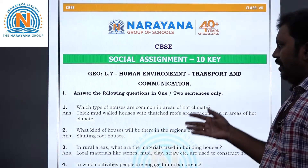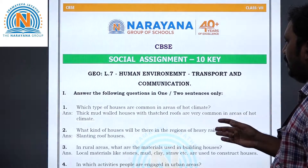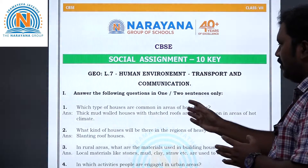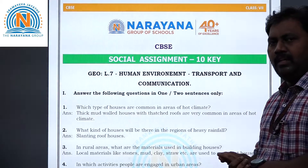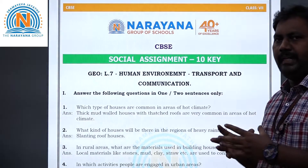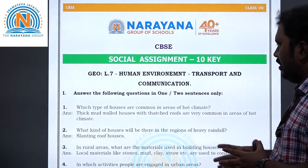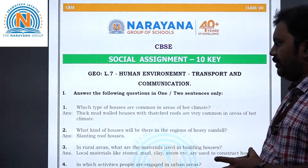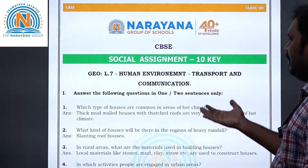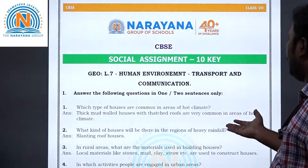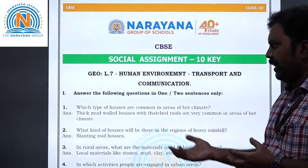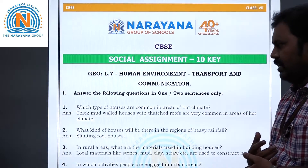Question 1: Which type of houses are common in areas of hot climate? Hot climate means more sunlight, more temperature. The answer is thick mud wall houses with thatched roofs are very common in the areas of hot climate.